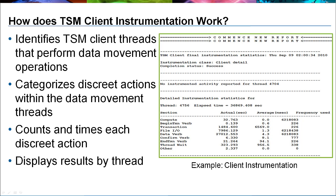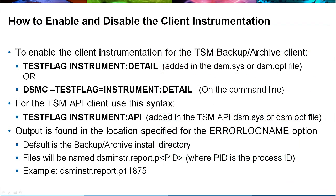Here is an example of a portion of a client instrumentation output. The TSM client instrumentation is controlled by making a change to the TSM client options file or by adding an option to the TSM client command line. To enable from the options file, add the testflag instrument:detail option to the dsm.sys or dsm.opt file. To enable from the command line, add the parameter -testflag=instrument:detail. When the client operation has completed, a file named dsm.instr.report.PID will be written to the same location as the dsm.error.log file. PID is a process ID.